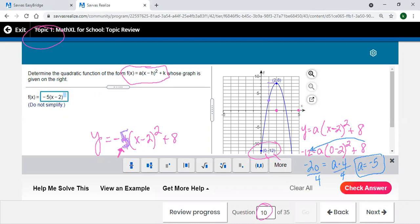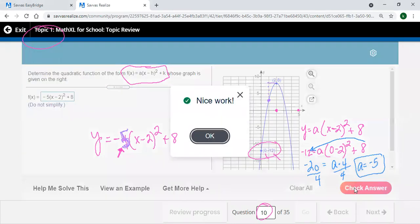All right, so I've got my negative 5 in parentheses. I had my x minus 2, shift 6 for the caret, get in the exponent, square, arrow to the right to get out of the exponent, and a plus 8. Feeling pretty good about that now that we did it two different ways. Let's see what she says.